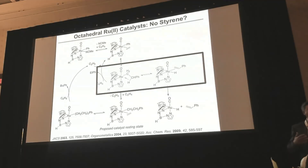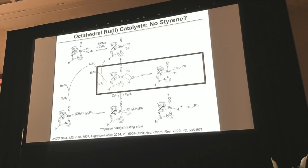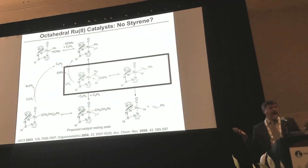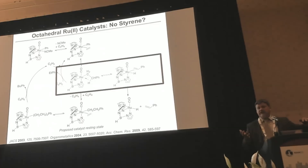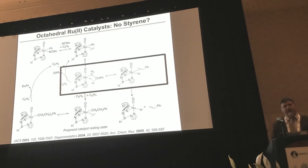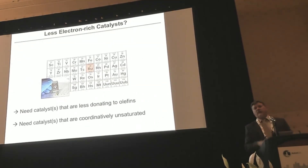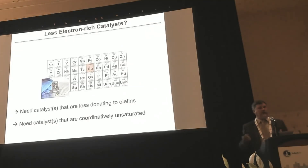We didn't get alkyl arenes, and it wasn't because beta-hydride elimination is a slow reaction — for the ruthenium complexes it is very fast, as you might expect. But it was a reversible reaction, as we demonstrated with labeling experiments. The issue was these are coordinatively saturated 18-electron complexes, so the rate of dissociation of the olefin is slow. The same reason insertion is slow in some cases. We felt like we needed to go to less-donating metals and find metals that were coordinatively unsaturated, so we could have a different route to dissociate the styrene or other alkyl arene product.